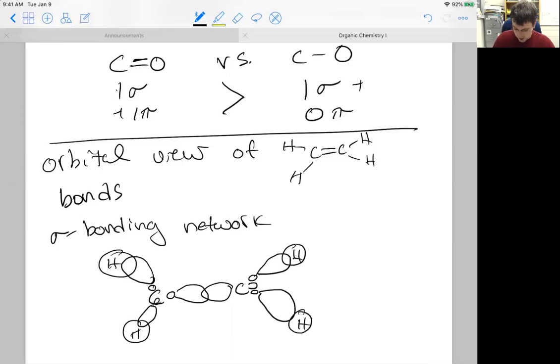What do we notice about this? If you recall, any time we have three things attached to a central atom, not the number of bonds but the number of things where things are atoms or lone pairs, then we count those things, and if they're three, then we need sp2 hybridized orbitals to form our sigma bonding network.